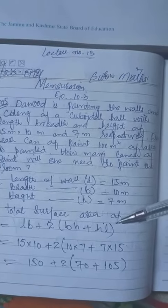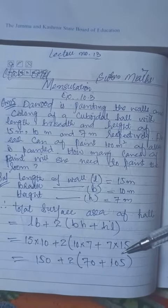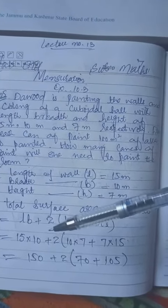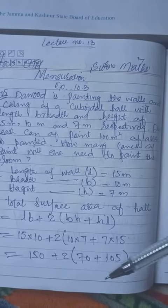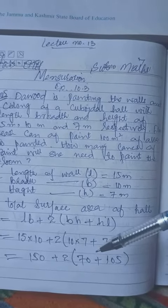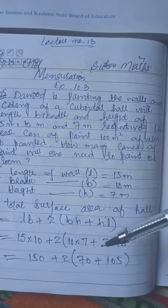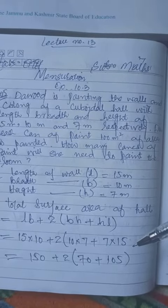LB + 2(BH + HL) = 15 × 10 + 2(10 × 7 + 7 × 15) = 150 + 2(70 + 105)